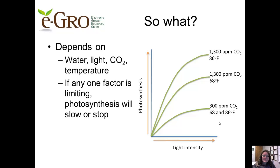So what does all of this mean for the grower? The rate of photosynthesis depends on the availability of several inputs: water, light, carbon dioxide, and appropriate temperature. If any one of these factors is limiting, photosynthesis will slow or stop. Consider these research results, which were adapted from work by Gostra in the 1960s.